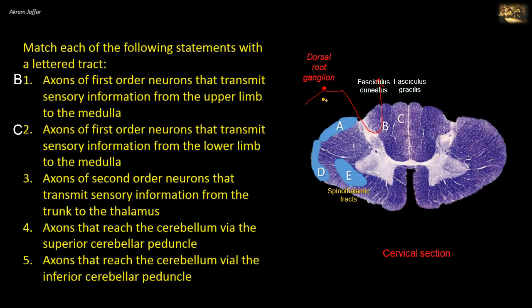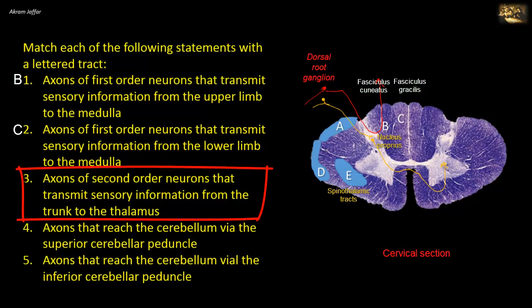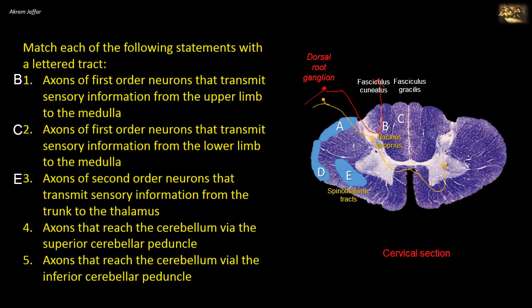First order neurons in the pain pathway are located in the dorsal root ganglion, but the fibers synapse with neurons located in the nucleus proprius, and the fibers of these second order neurons cross in the anterior commissure and ascend in the spinothalamic tract. So this conforms with statement 3: axons of second order neurons that transmit sensory information from the trunk to the thalamus are located in E, the spinothalamic tract. These second order neurons do not need to relay in the medulla; they pass across the medulla and relay with third order neurons in the thalamus — hence the name spinothalamic.